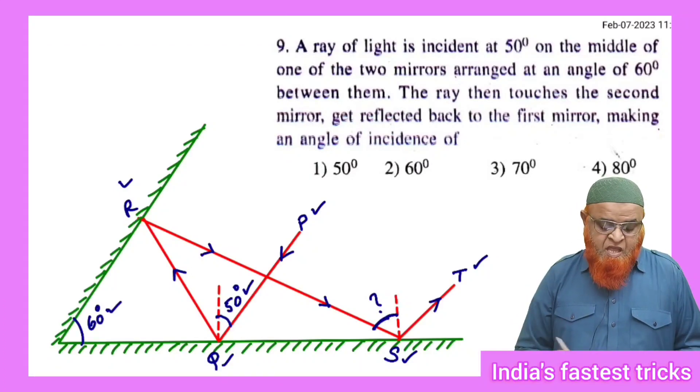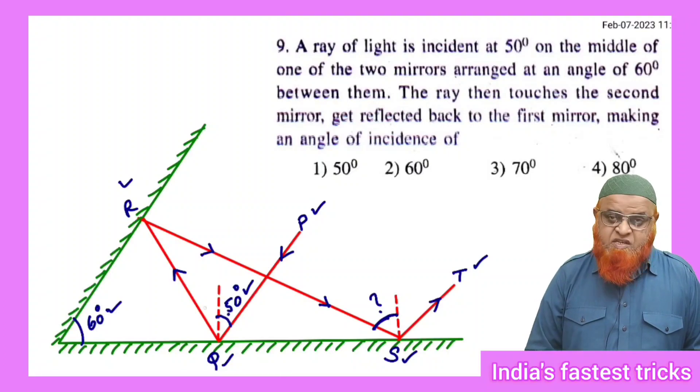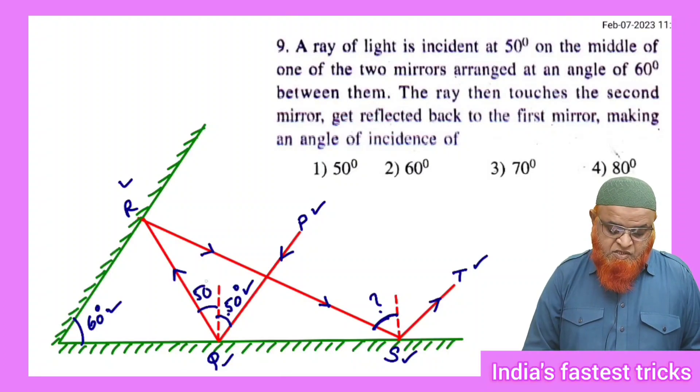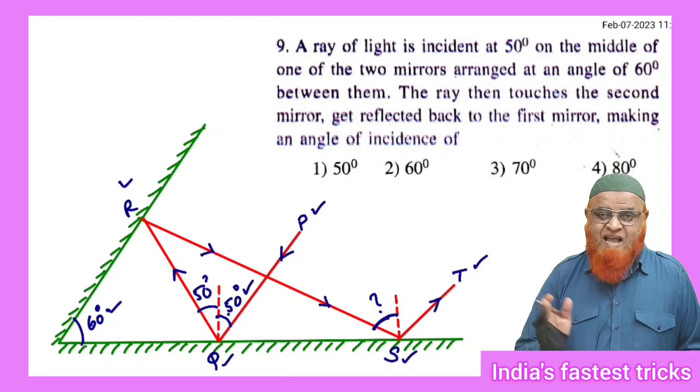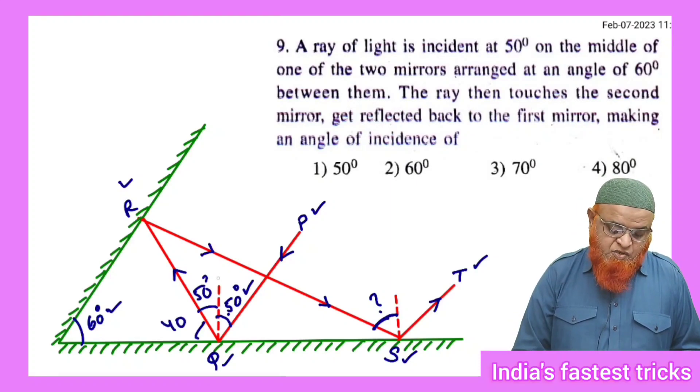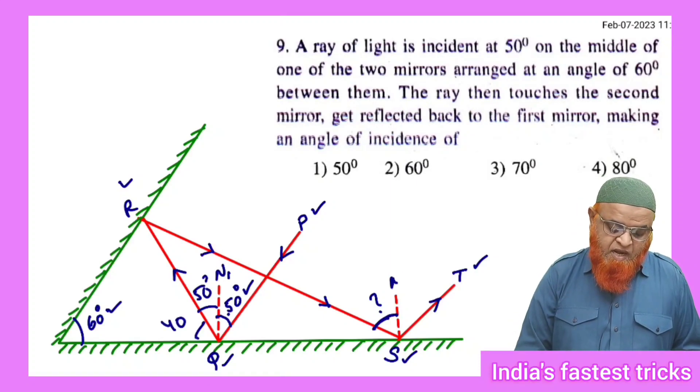It is very simple to solve this problem. You can just see here if this is 50, this is also going to be 50 degrees because angle of incidence is equal to angle of reflection, and this is going to be 40 because this is normal N1.